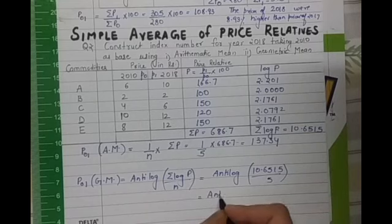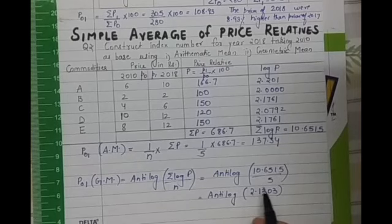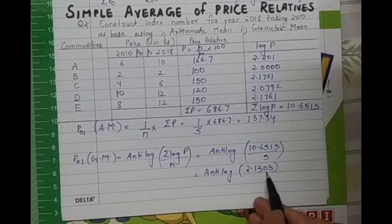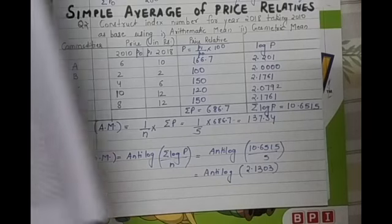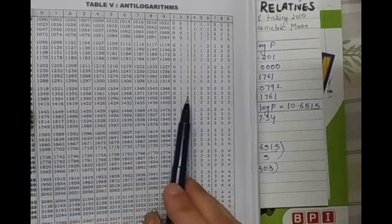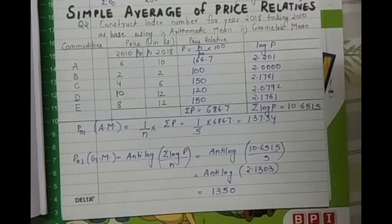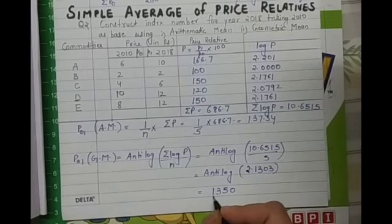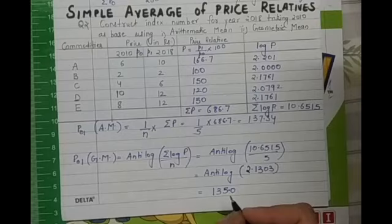So your answer will be anti log of 2.1303. We will look into the anti log table for the value of 13 into the column 0 and then into the column 3. So the anti log value will be 1350. Now I need to place a decimal. Here the number is 2, I will add 1 and 2 and jump position thrice: 1, 2, 3. So your answer will be 135.0.